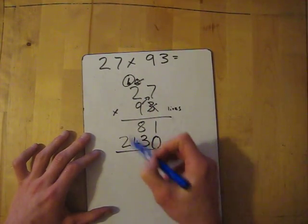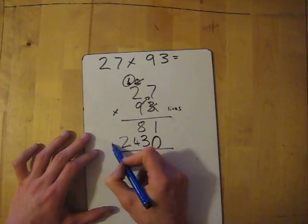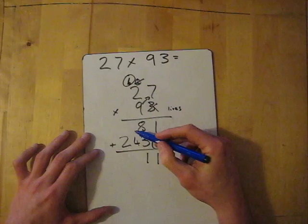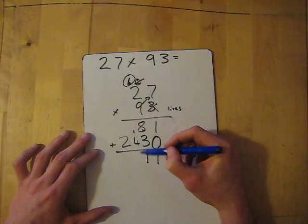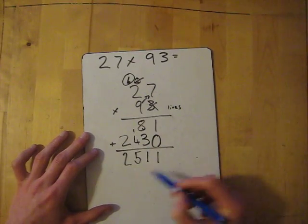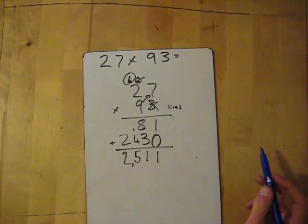Now this is added and it's all in the right columns. So we just do an add now. One add zero, it's one. Eight add three, it's 11, carry the one. One add four, it's five. And then two add nothing, it's two. So that's two thousand five hundred and eleven.